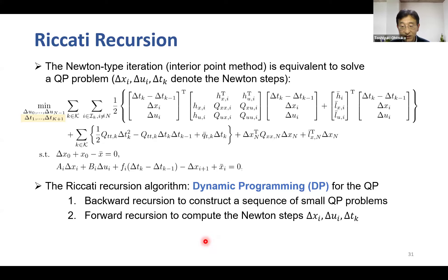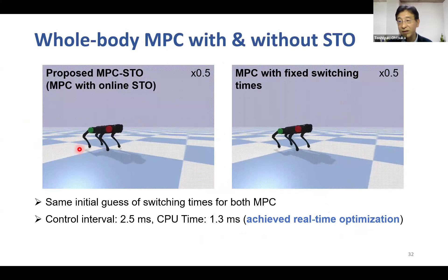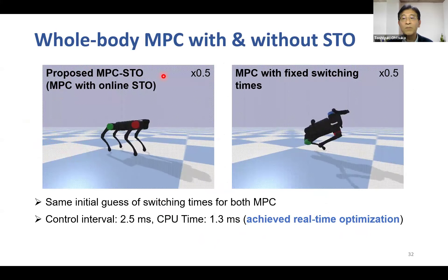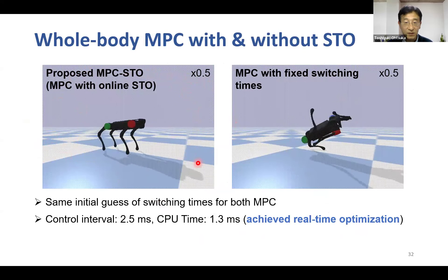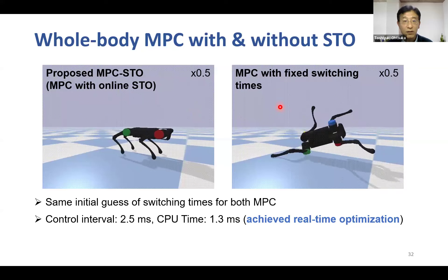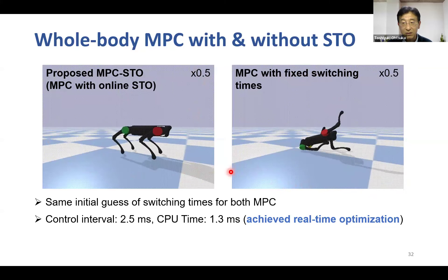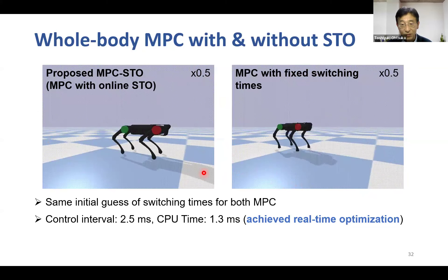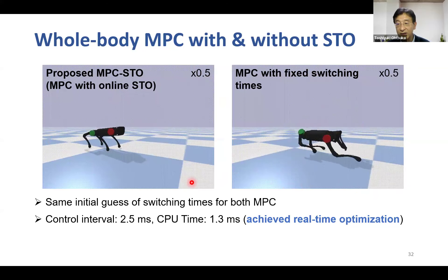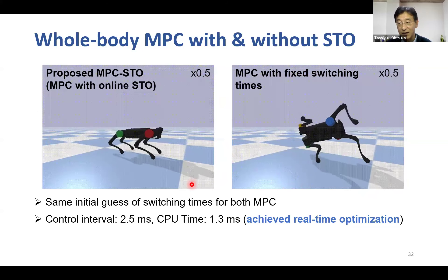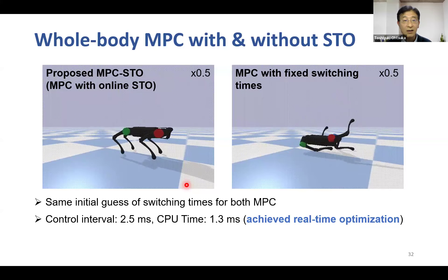To realize whole-body MPC with switching time optimization for a quadruped, additional techniques for efficient optimization are employed. We verify effectiveness through physical simulation, comparing whole-body MPC with online switching time optimization against whole-body MPC with fixed switching time. Only the proposed method with switching time optimization succeeds in jumping simulation, demonstrating the importance of switching time optimization. Both MPC run at 400 Hz, corresponding to a sampling period of 2.5 milliseconds. The proposed method achieved 1.3 milliseconds computation time per update, achieving real-time optimization even for this complicated problem.